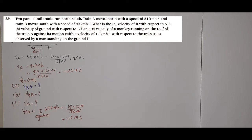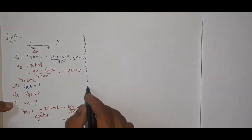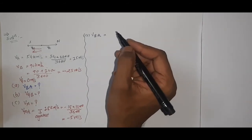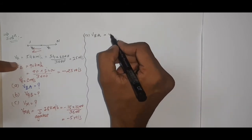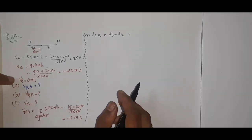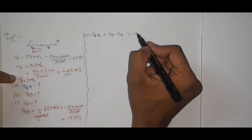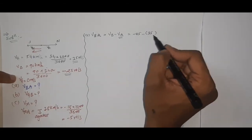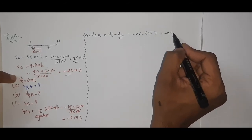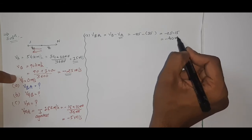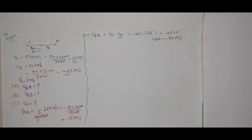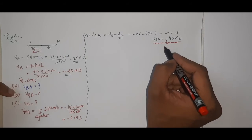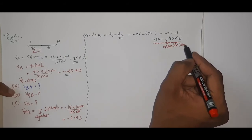Starting with part (a): velocity of B with respect to A. Using the relative velocity concept we already know, we write vBA = vB − vA. vB = −25 and vA = 15, so: −25 − 15 = −40 meter per second. So vBA = −40 meter per second, which shows the opposite direction indicated by the minus sign.